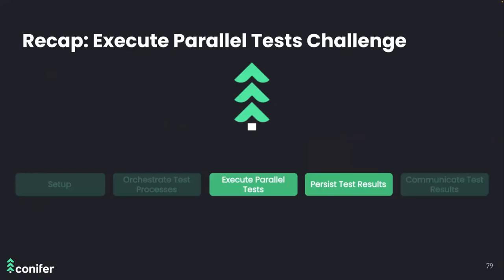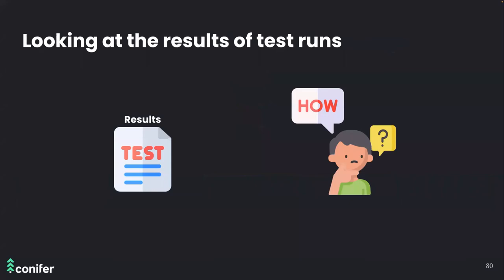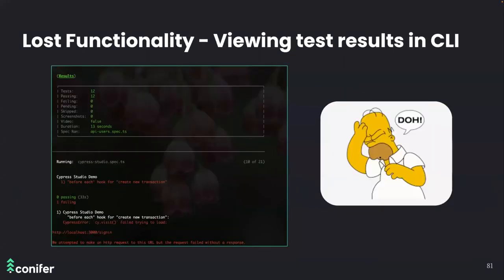Now that tests run in a distributed environment on the cloud, how do we retrieve test results? Normally the user could view results in real time through the terminal, but because Conifer executes tests on the cloud, they lose that feature. We can create a test report through an HTML report after the test run, or achieve real-time viewing, which is the functionality developers have when running Cypress locally.